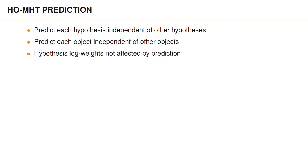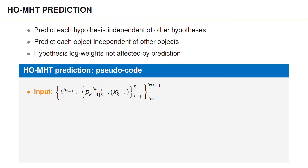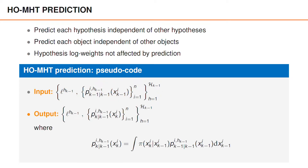The log weights or log probabilities of the hypotheses are not affected by the prediction. So in hypothesis-oriented MHT, the prediction starts with the posterior parameters at time k minus one — that is the log weights and the densities for all objects and all hypotheses — and the predicted parameters are given by applying the prediction to each object density. If we have Gaussian densities and a linear Gaussian transition density, we use the Kalman prediction. The number of hypotheses is the same and the log weights are the same, so the prediction in hypothesis-oriented MHT is relatively simple.